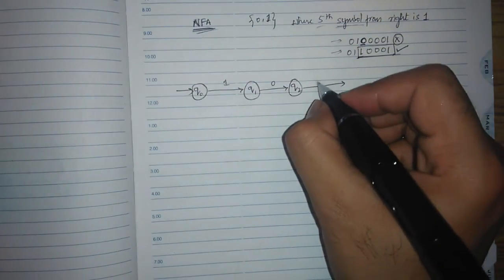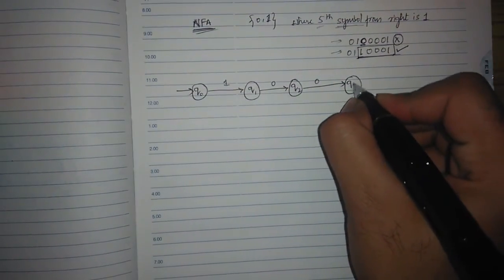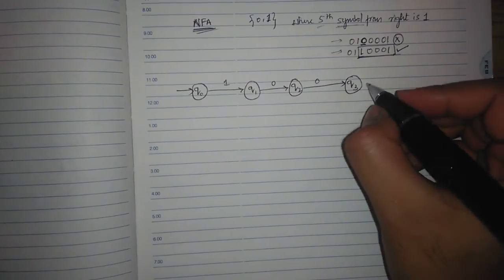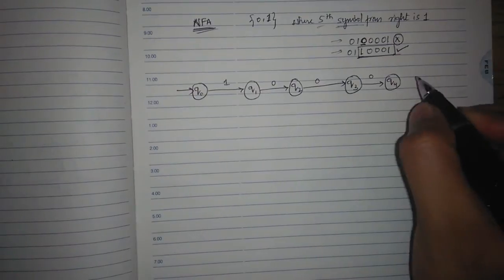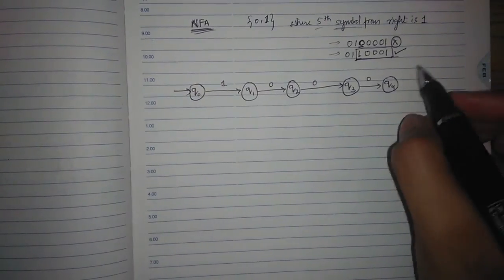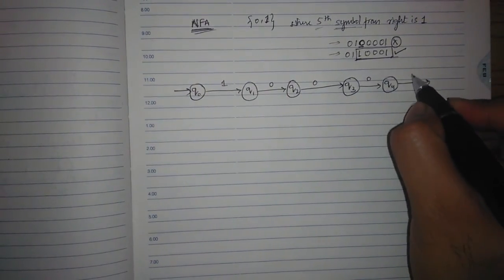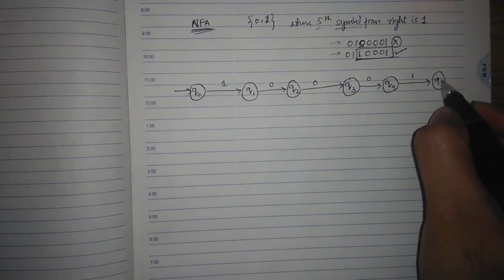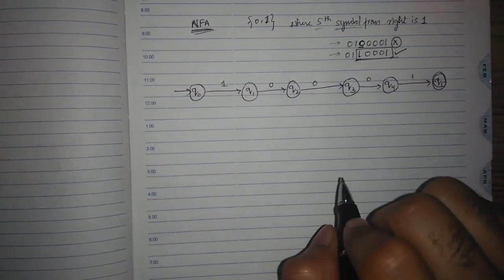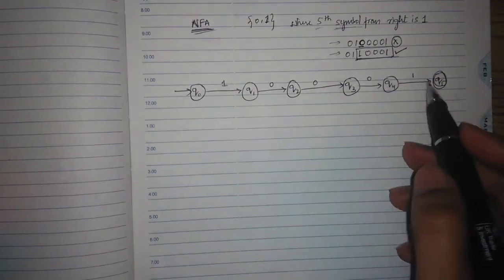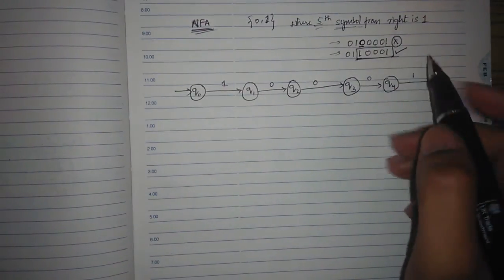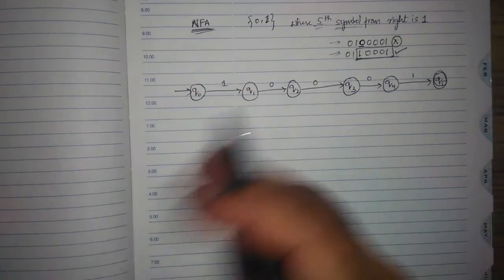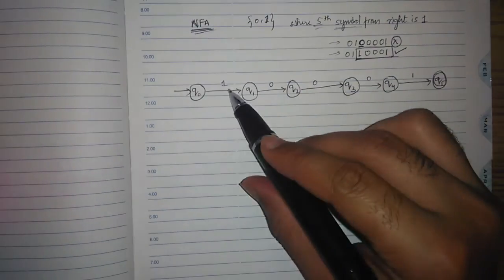Consider q0 here, q3. So again accept 0 here, q4. Then accept 1, q5, and let this be the final state. So this accepts a string where the fifth symbol is 1, the fifth symbol from right is 1. So 1, 2, 3, 4, 5 - the fifth symbol is 1, it is accepting this string.